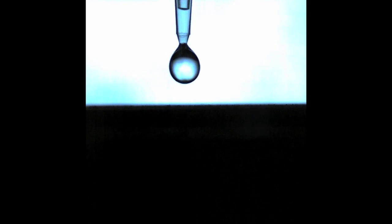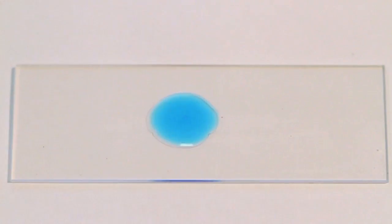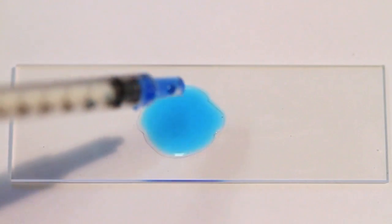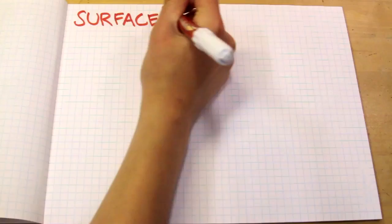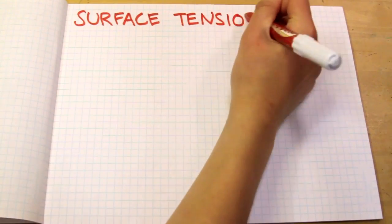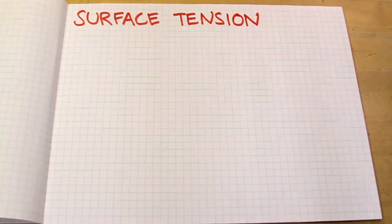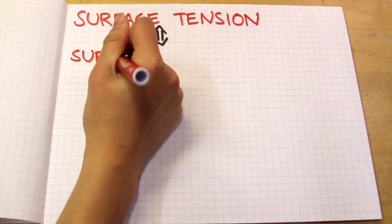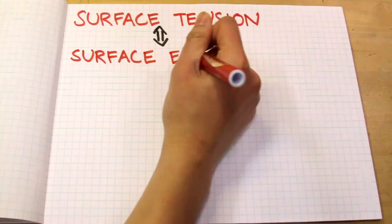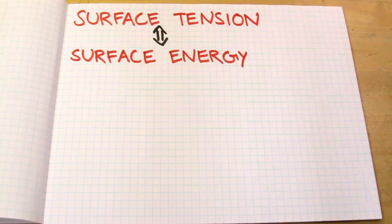What causes water droplets to bounce when they hit a surface? What determines whether a surface is hydrophobic or hydrophilic, and what does it mean when a surface is superhydrophobic? It all comes down to surface tension. Surface tension, or surface energy, is a tensile or contractile force.